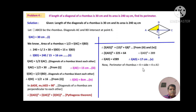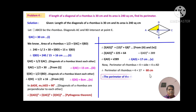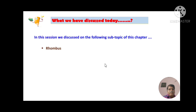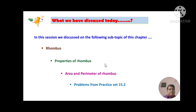Now, perimeter of rhombus = 4 × side = 4 × 17 = 68 cm. The perimeter of the rhombus is 68 cm. Friends, the problem is straightforward — we just need to attempt it in proper steps and recall the formulas and properties. I think you have understood all four problems. What we discussed today in this session: rhombus, properties of rhombus, area and perimeter of a rhombus, and problems from Practice Set 15.2.